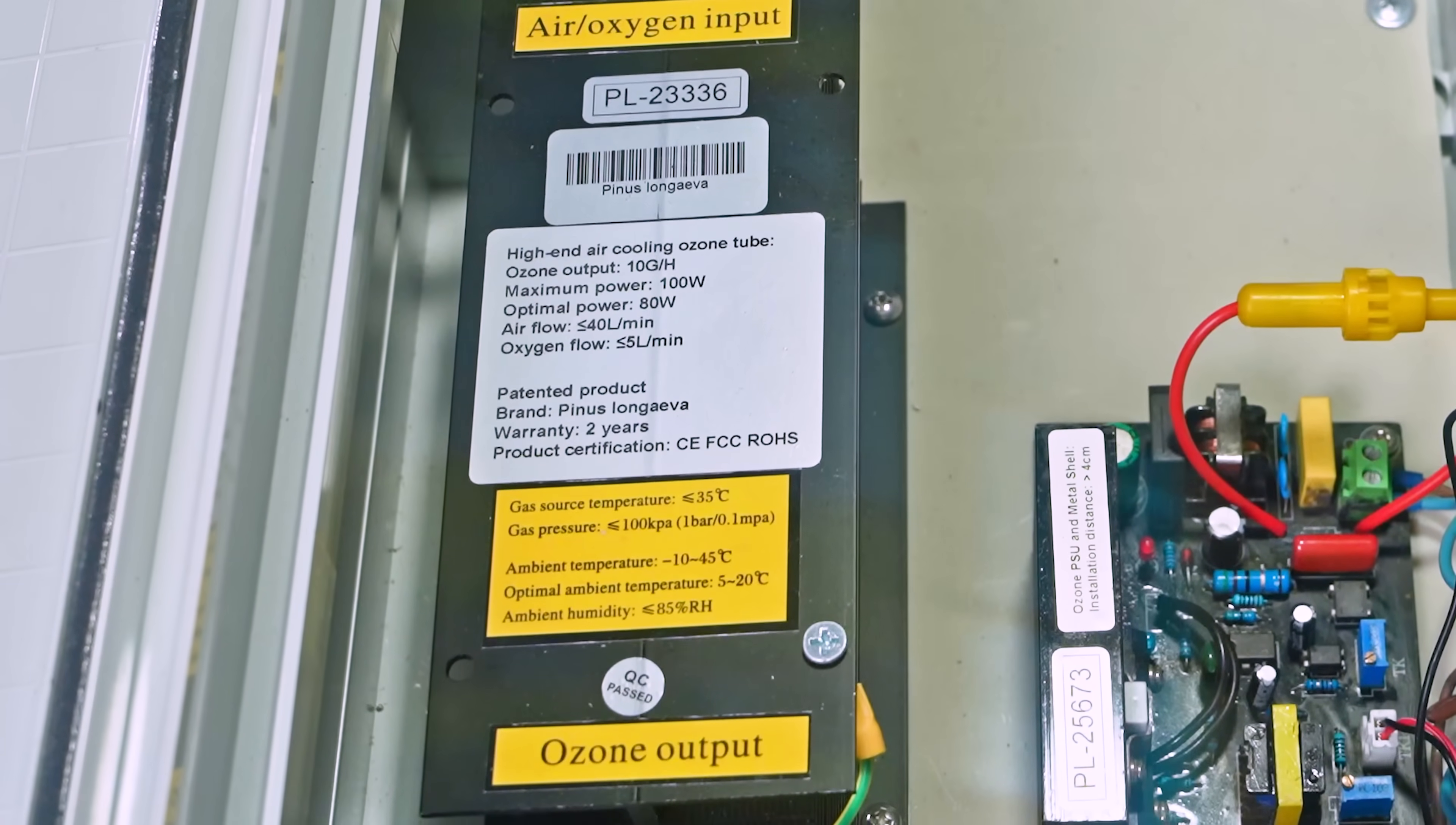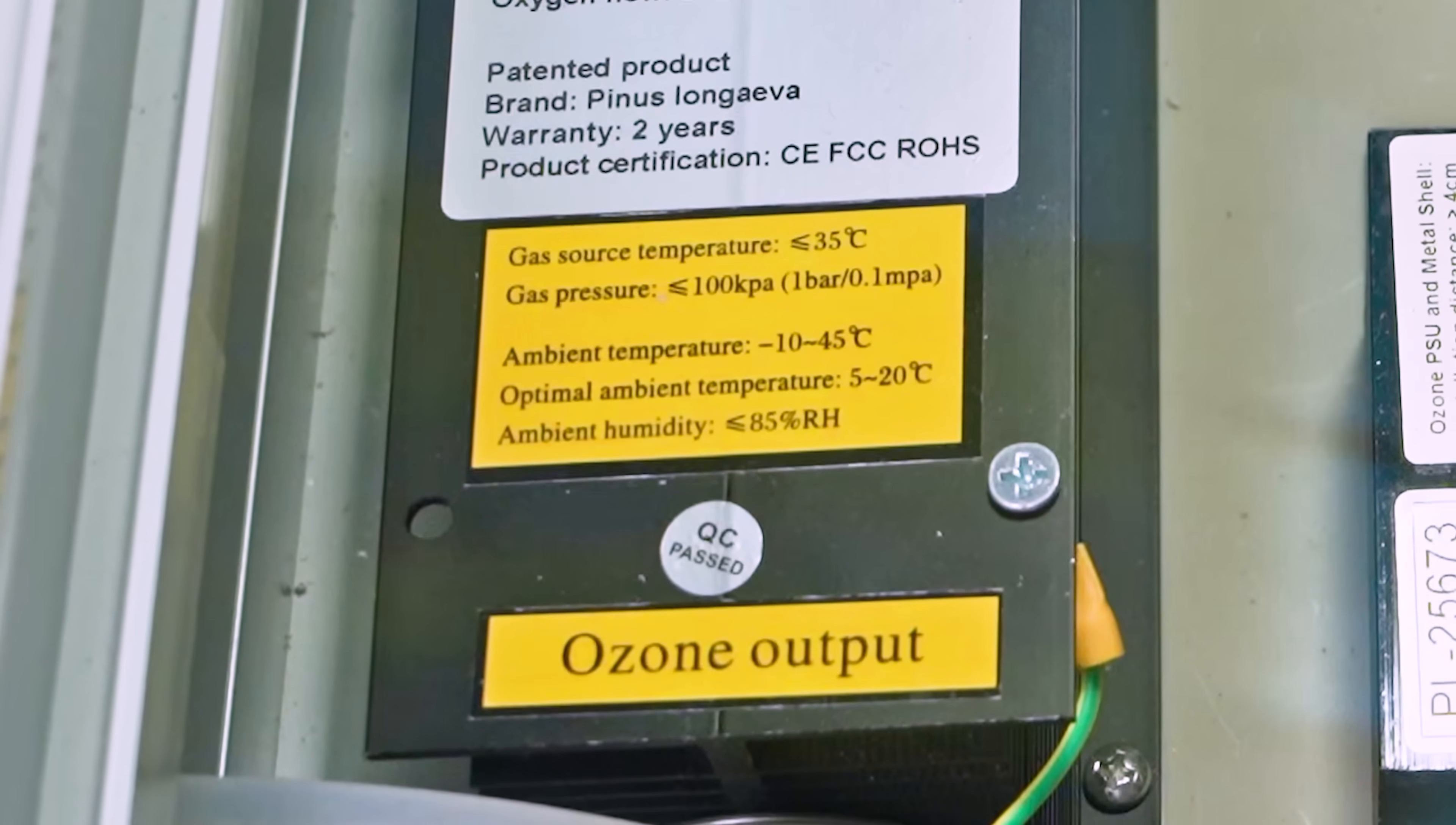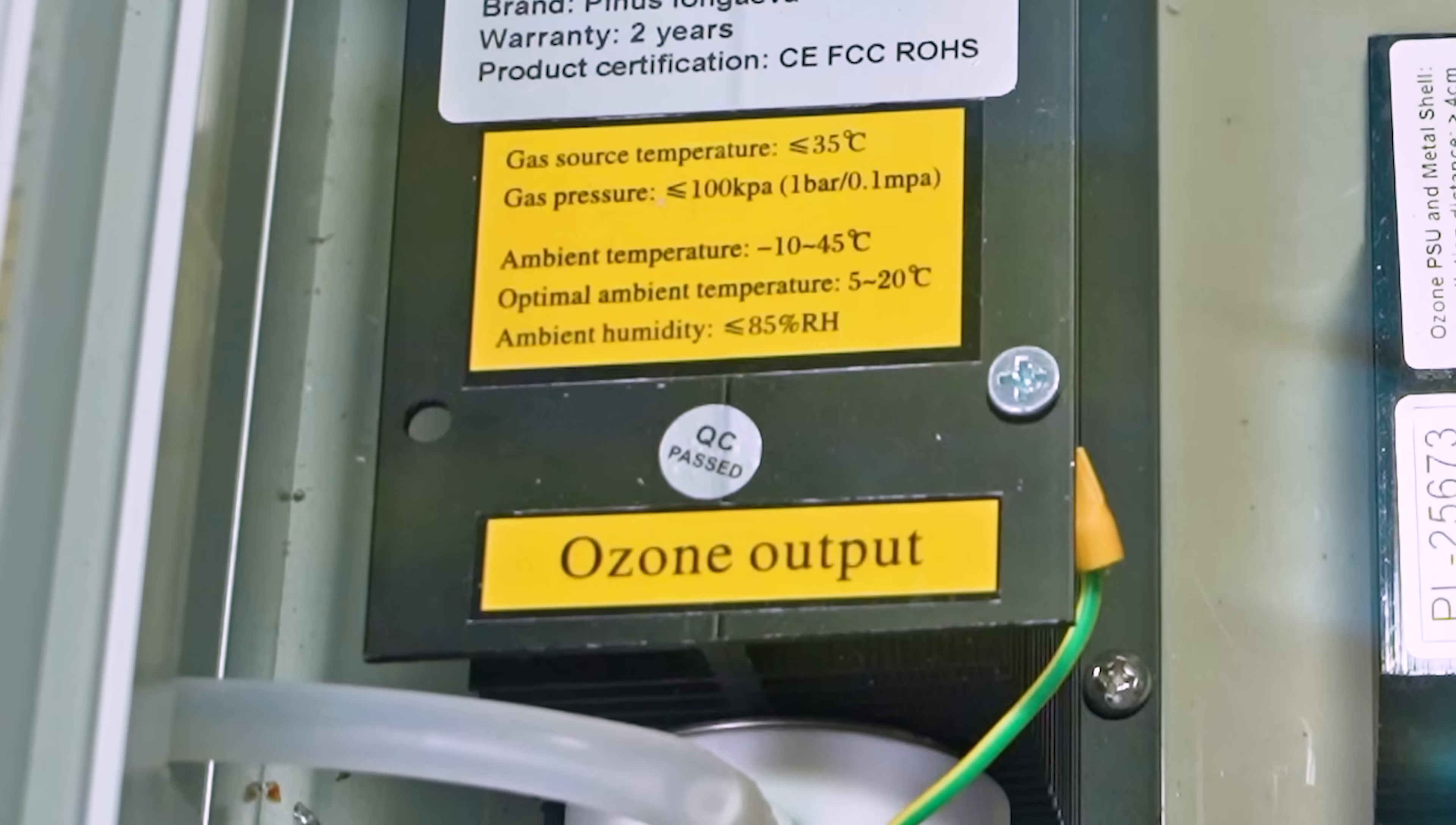About 10% of the oxygen that enters one end of the tube turns into ozone and comes out the other end.